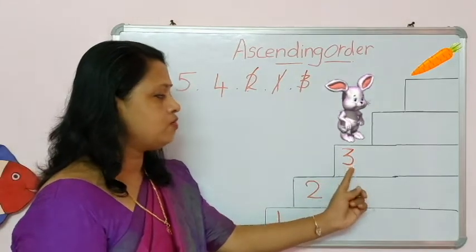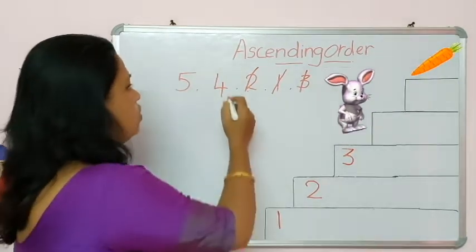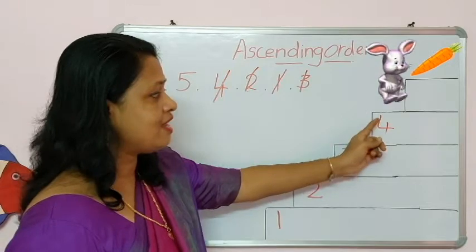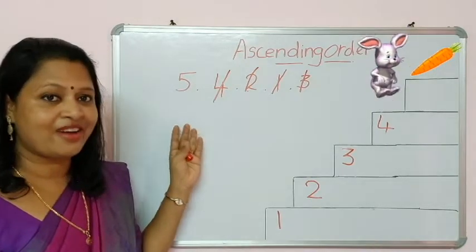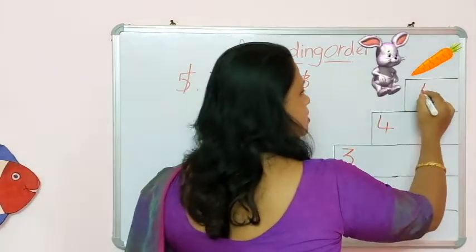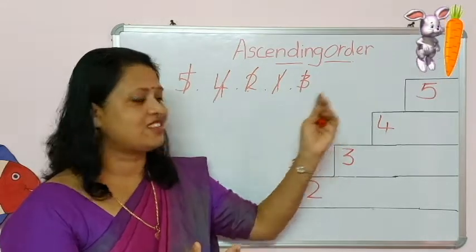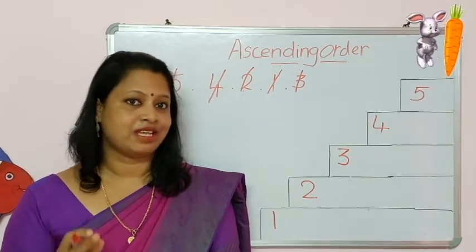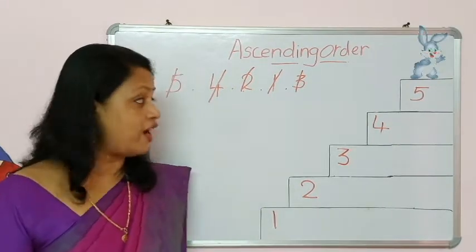Now bunny is on number 3. Which is the next number? Right, number 4. So cut this 4 and write it here. Now the bunny is on number 4. There is only one more step — which is the last number? Right, 5. So cut this 5 and write number 5 here. See, bunny is happy — he reaches his carrot! So here we used ascending order to help Mr. Bunny. In ascending order the numbers keep on increasing.